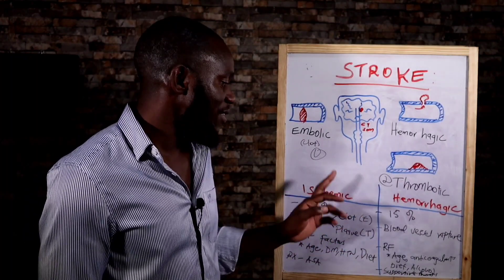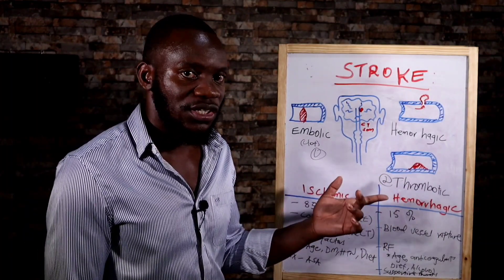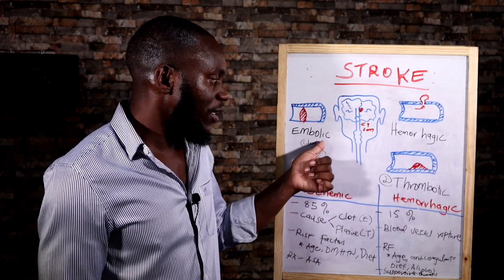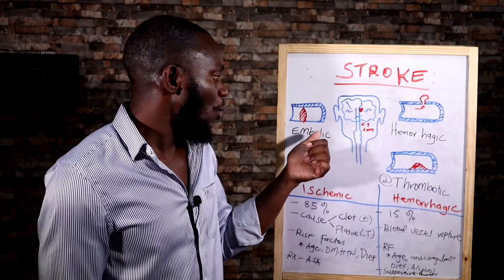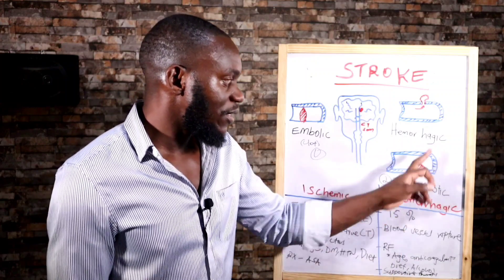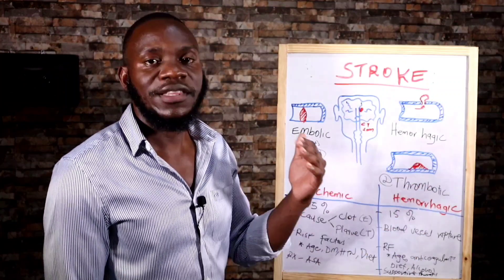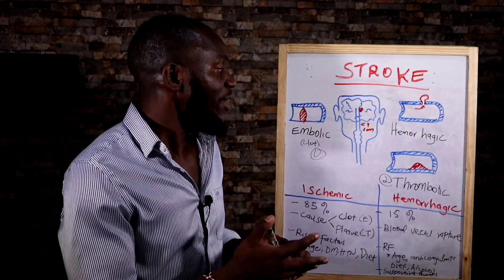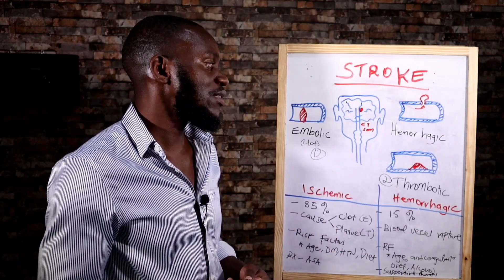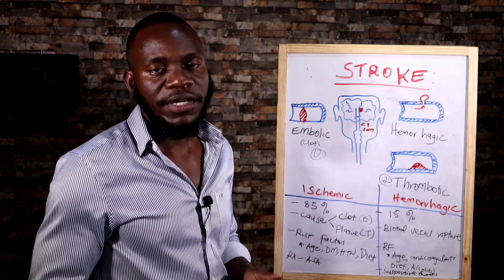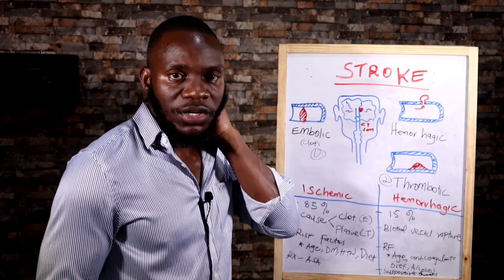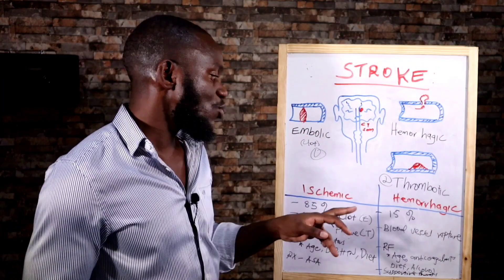85% of cases are ischemic and 15% are hemorrhagic. For ischemic stroke, the cause is an embolus or thrombus — a blood clot or fat/gas bubble. For hemorrhagic stroke, there is a rupture in the blood vessels supplying the brain. Diagnosis is made via CT scan: if blood is visible in the brain on the scan, it is hemorrhagic stroke; if no blood is seen, it is ischemic stroke.